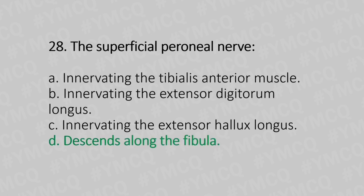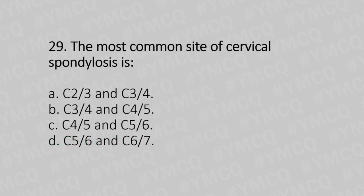Now let's move to question number 29. The most common site of cervical spondylosis is. Option A: C2-C3 and C3-C4. Option B: C3-C4 and C4-C5. Option C: C4-C5 and C5-C6. Option D: C5-C6 and C6-C7. And the answer is Option D, C5-C6 and C6-C7.